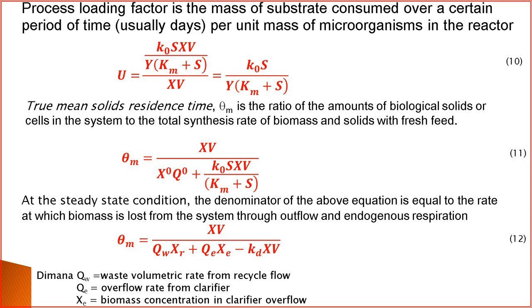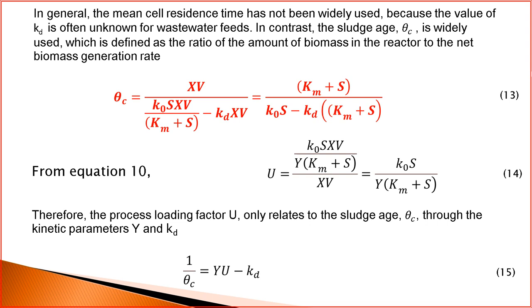Where Qw is the waste flow rate from the recycle stream, Qe is the overflow rate of the clarifier, and Xe is the concentration of biomass at the clarifier overflow. The term sludge age theta_c is defined as the ratio of biomass in the reactor to the net rate of biomass generation: theta_c = X·V / (k0·S·X·V / (Km + S) − kd·X·V) = (Km + S) / (k0·S − kd·(Km + S)).